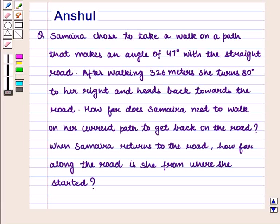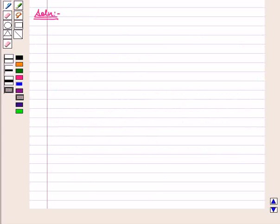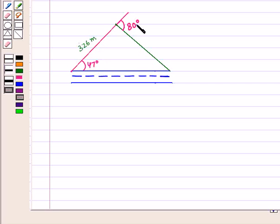We are given that Samaira starts walking on a path which makes an angle of 47 degrees with a straight road. After walking 326 meters, she turns 80 degrees to her right and heads back towards the road. Let us first draw its figure. Let this be a straight road. At an angle of 47 degrees, there is a path. Samaira walks 326 meters on this path, then she turns 80 degrees to her right and starts walking on this path so that she reaches the straight road. This will be her current path which meets the road.